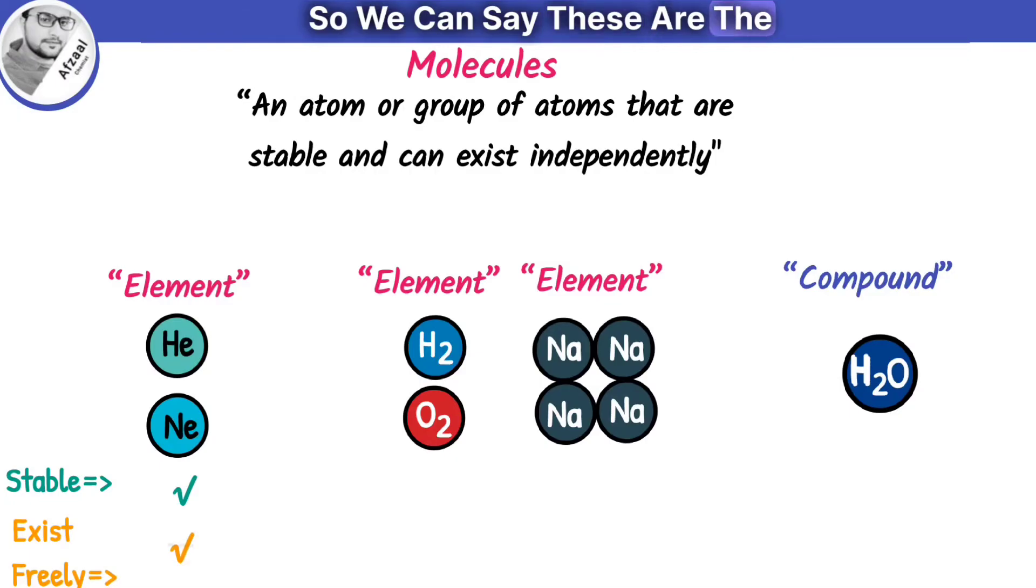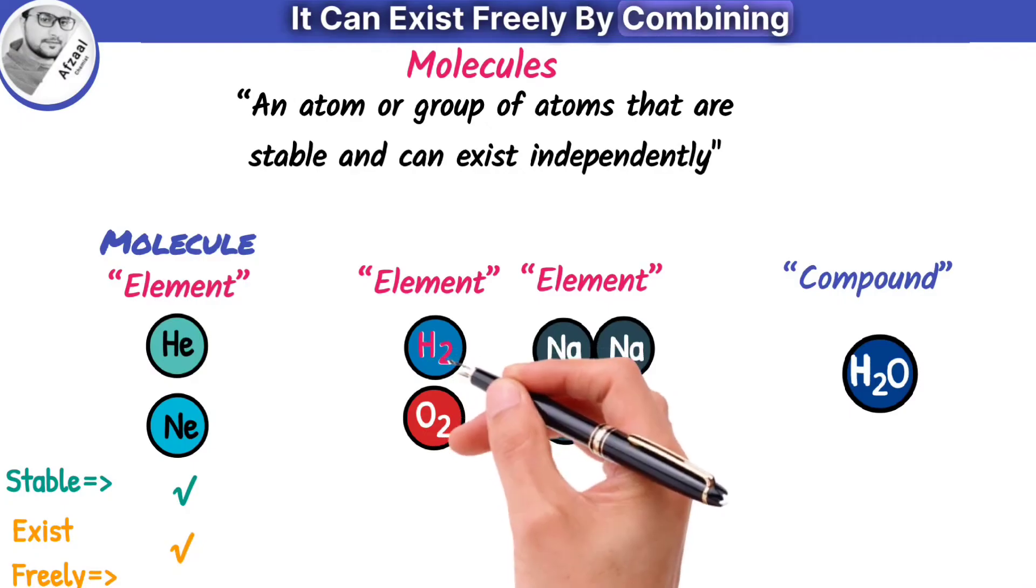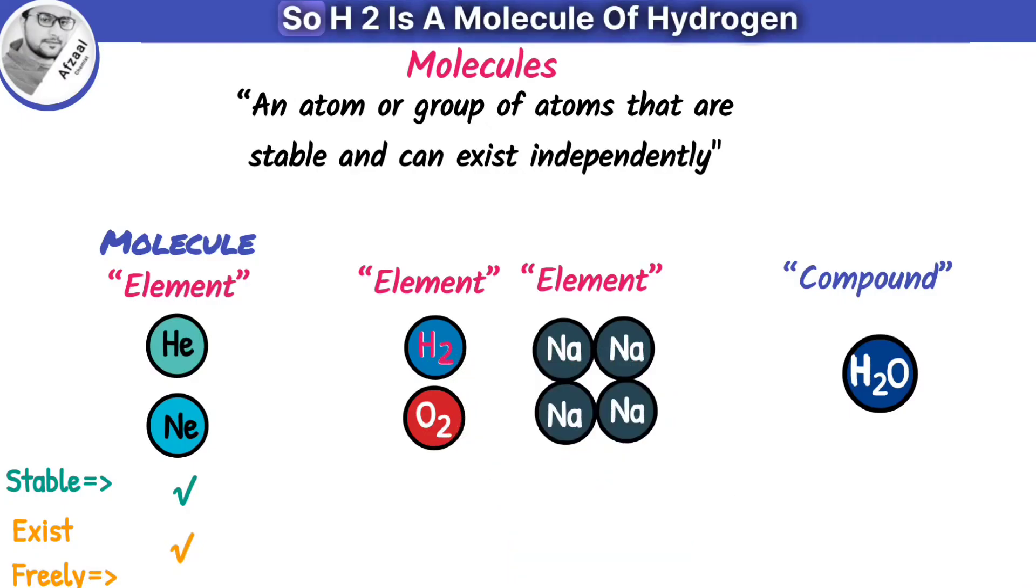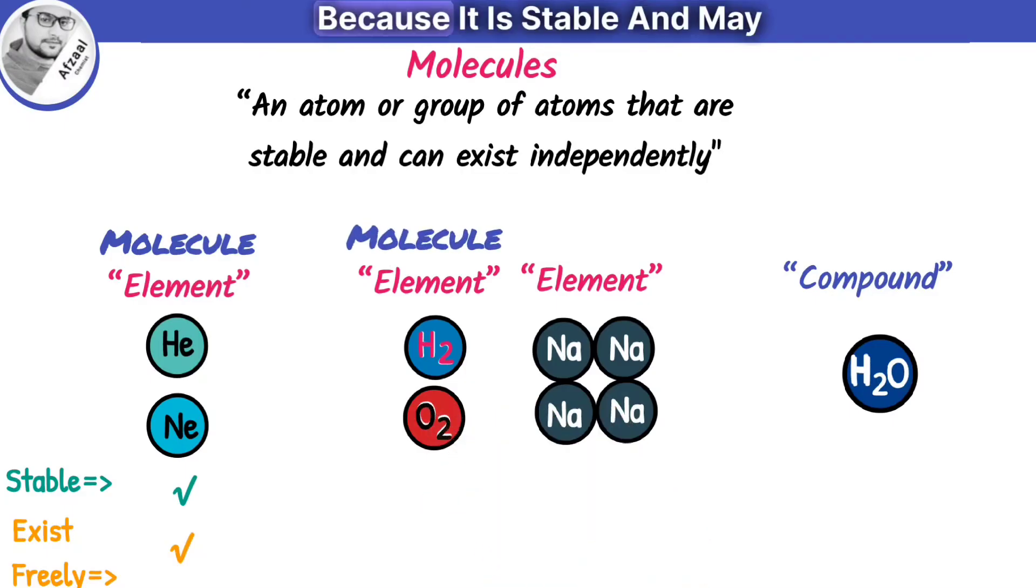The single hydrogen atom is not a molecule because it is unstable and cannot exist alone in nature. It can exist freely by combining two atoms of hydrogen, so H2 is a molecule of hydrogen. Similarly, O2 is a molecule of oxygen because it is stable and may exist freely.